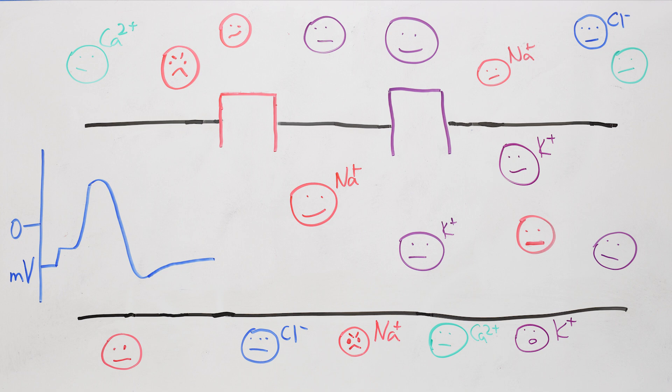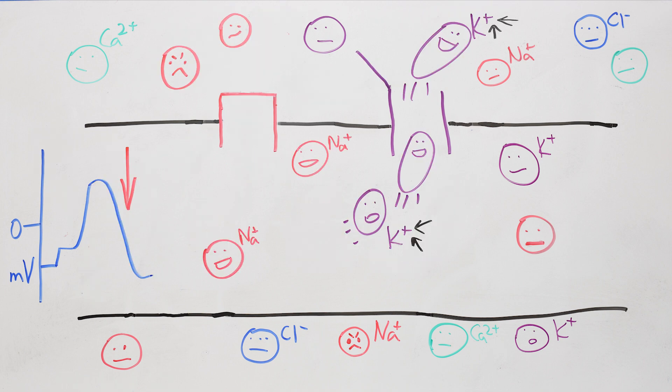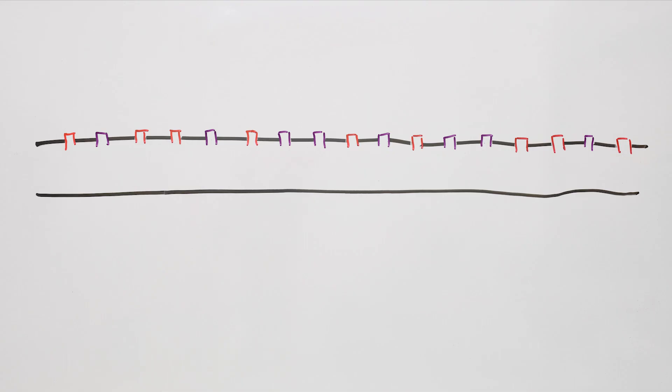So let's review quickly. The initial spike happens because positively charged sodium ions rush in, and then the voltage drops back down because positively charged potassium ions rush out. And if we zoom out a bit, we'll see how the spike moves along the axon.